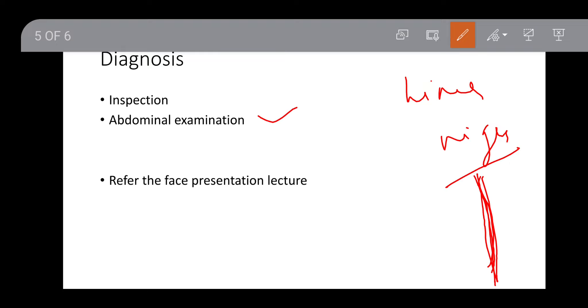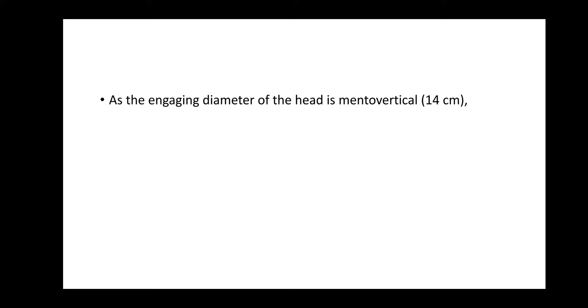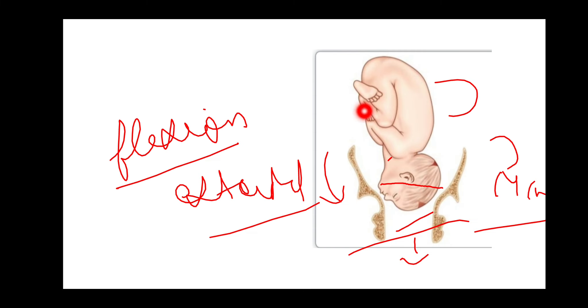Then we will do abdominal examination with palpation. In palpation, we will check all the grips - the fundal grip, lateral grip, and pelvic grip. We will try to feel the occiput and the sinciput on either side of the skull. We will do the fundal grip to feel the breech, then the lateral grip on both sides to feel the back and limbs, and the pelvic grip to assess engagement.